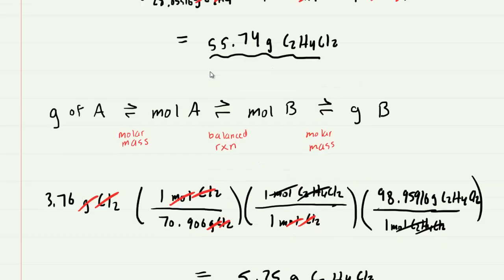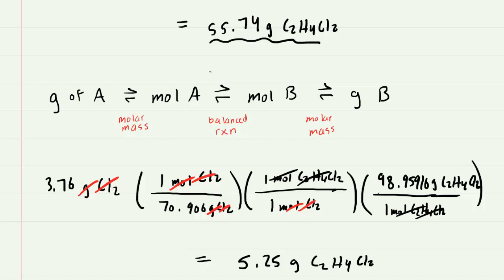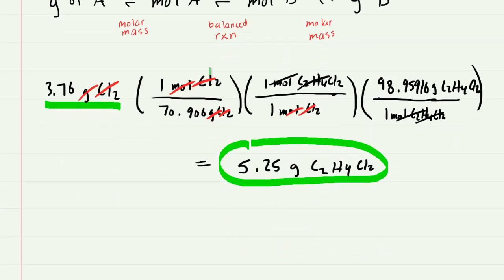So compare that 5.25 grams of product that we got with 55.74 grams of product. As to which one is the correct answer, you will always select the one that leads to the smallest amount of product. We only have enough chlorine to generate this amount of the product and therefore we are limited to that number of grams of product. So this smaller number of grams will indeed be the correct answer to the question.